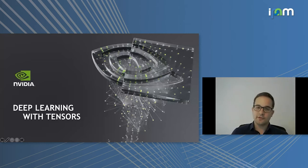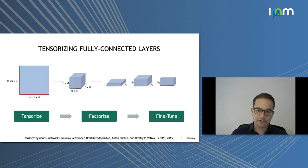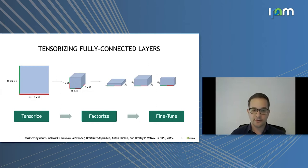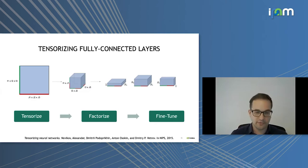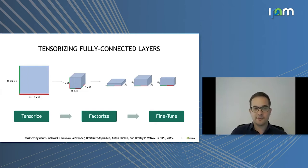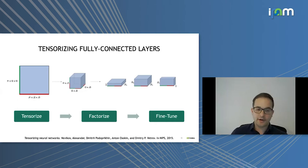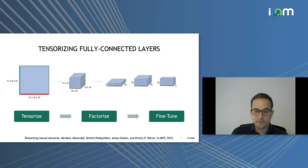Now that we have tensor decompositions, we can apply them to neural networks by decomposing the model's parameters. The first use was by Novikov et al., who proposed to tensorize the matrix parametrizing fully connected layers. If you have a fully connected layer with a matrix of size i1×i2×i3 rows and j1×j2×j3 columns, you can tensorize it by reshaping into a higher-order tensor where each mode jointly parametrizes part of the inputs and outputs, then decompose that tensor using tensor train. During inference you directly contract the activation tensor with the decomposition's factors and can fine-tune with respect to the cores, resulting in large compression ratios and better performance.